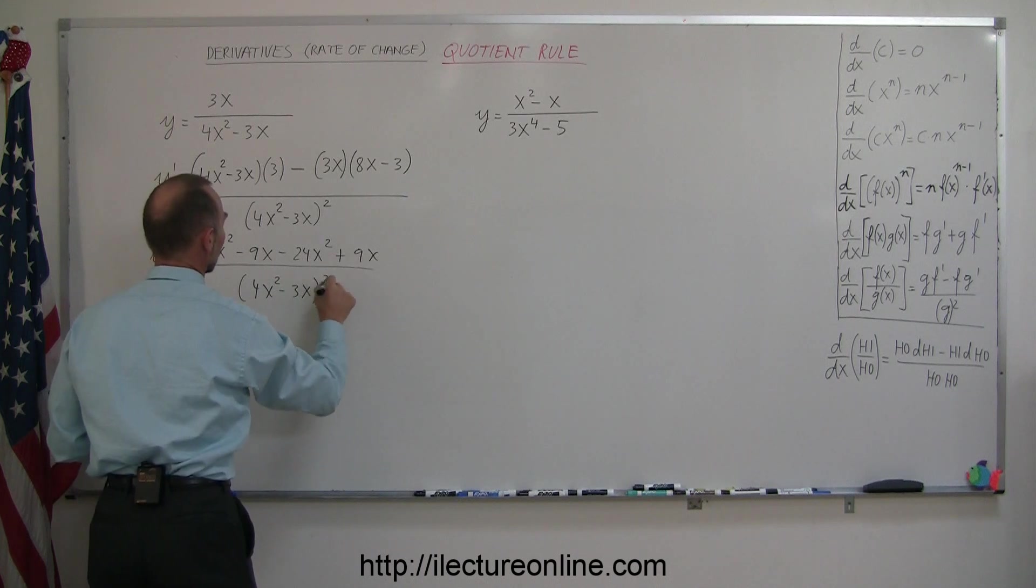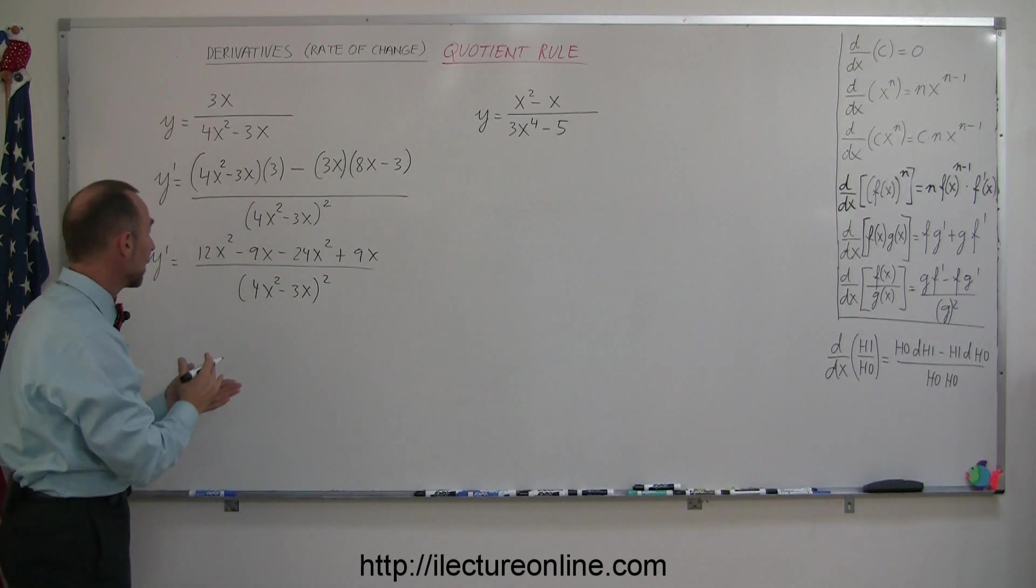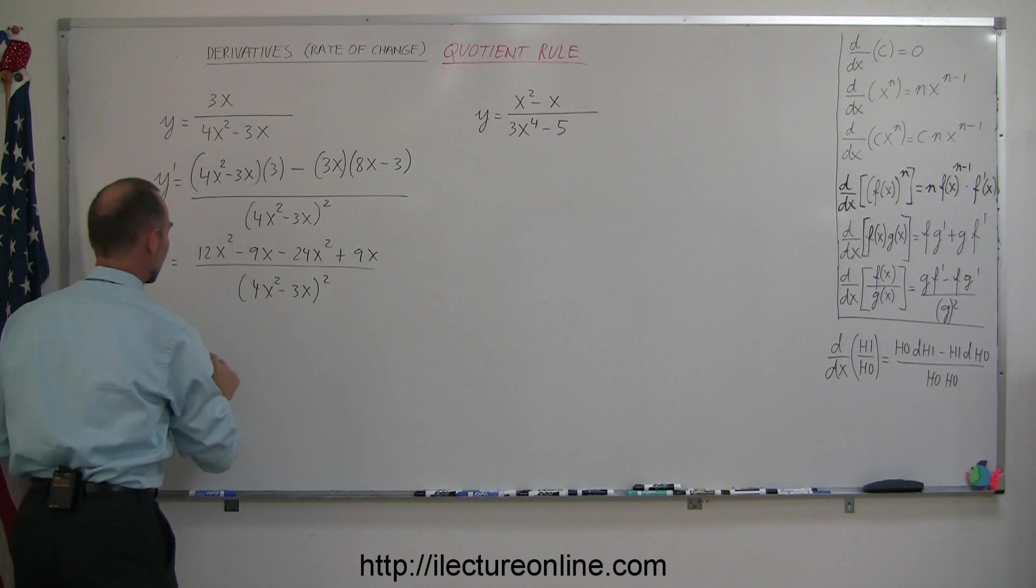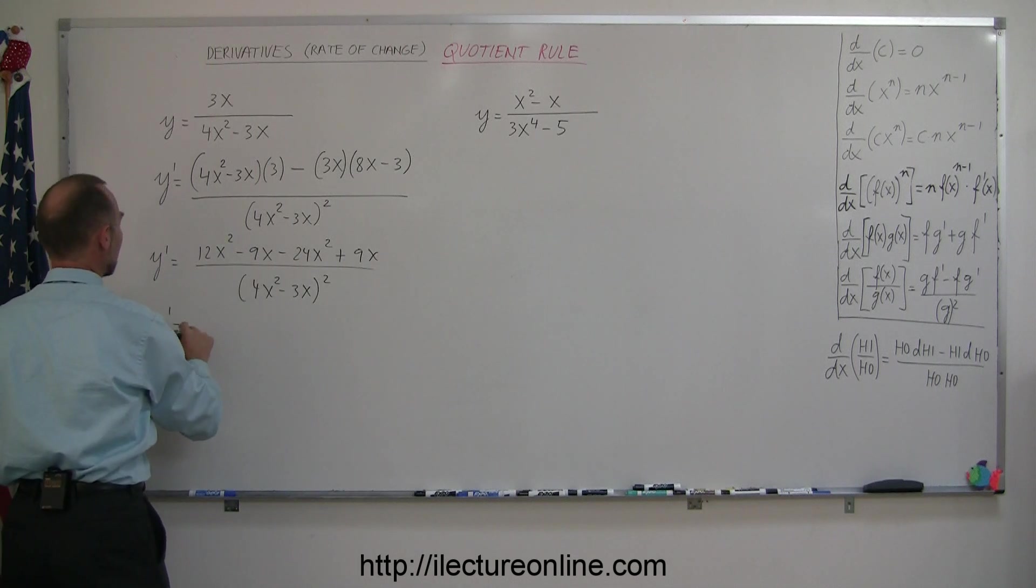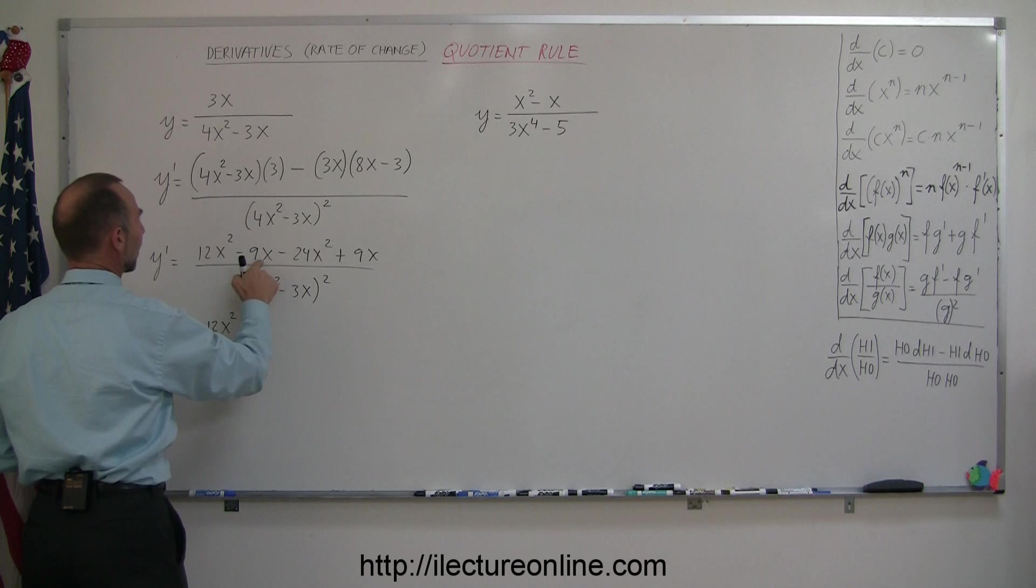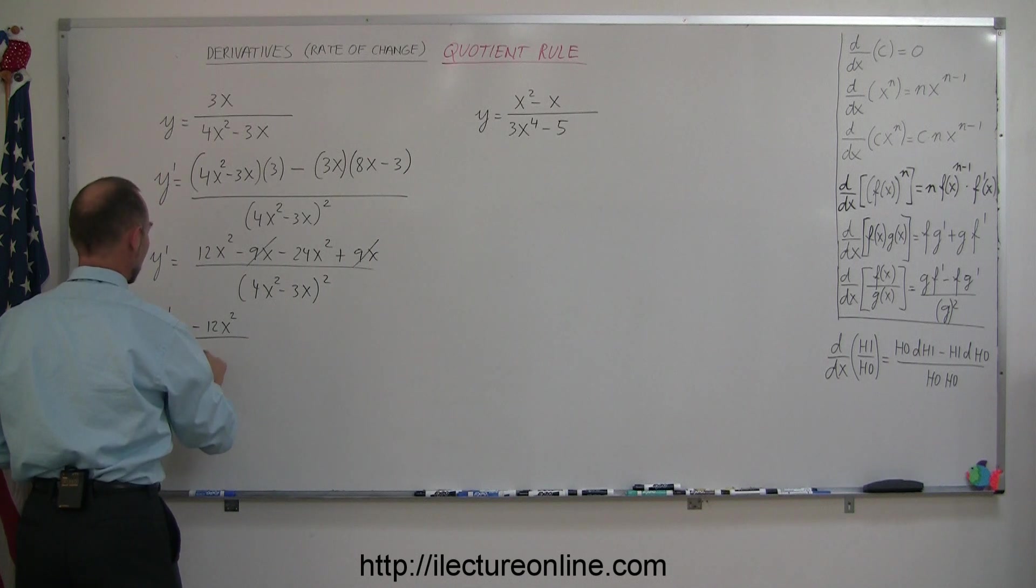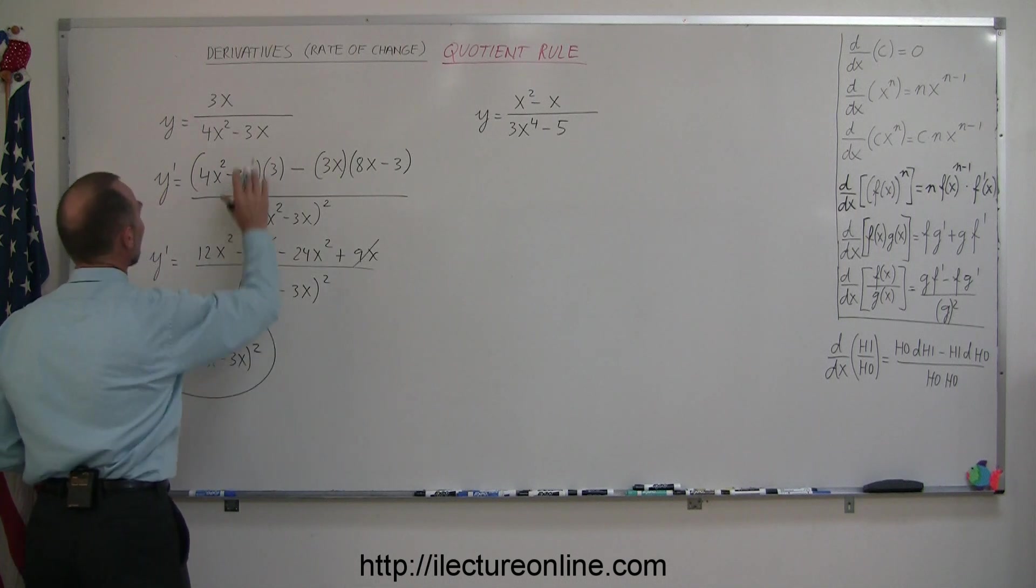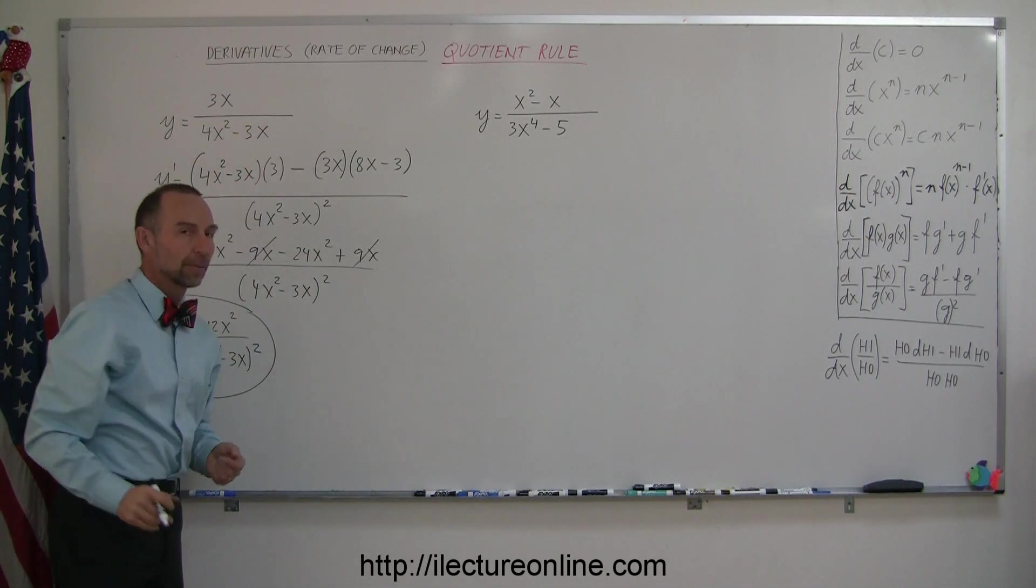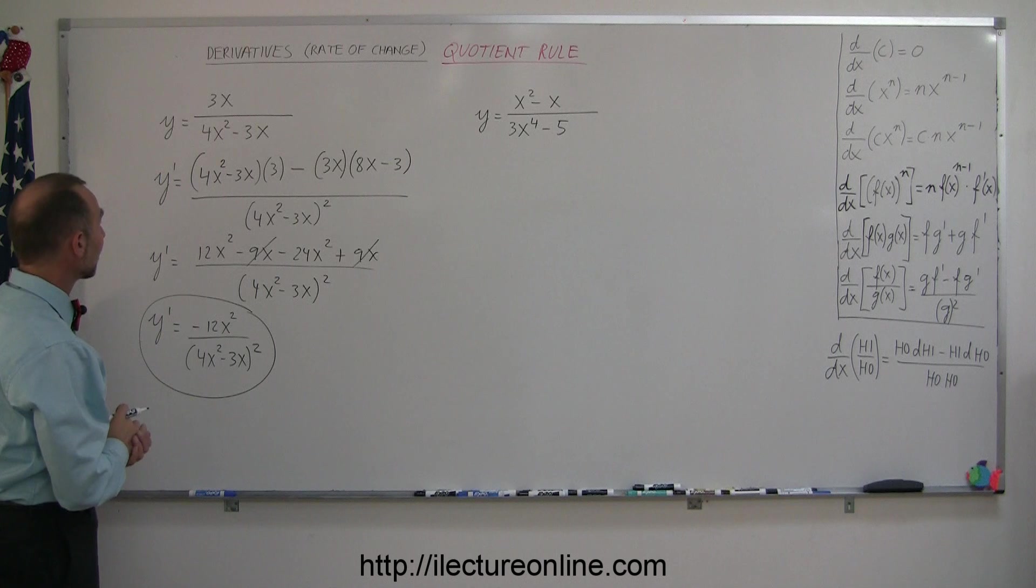Collecting common terms, we have 12x² minus 24x² so y' equals -12x². We have a -9x plus 9x, they cancel out. Then we divide the whole thing by (4x² - 3x)² and that would be the derivative of the two functions divided by each other.